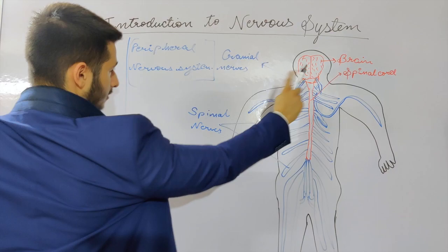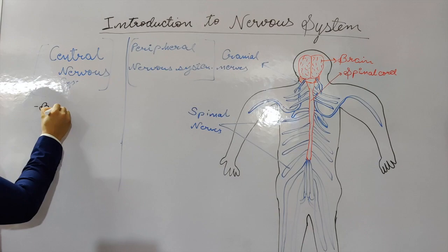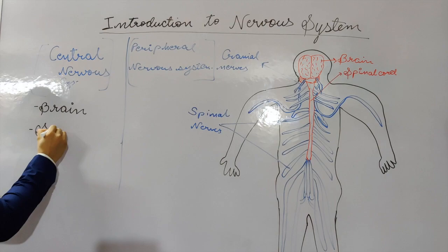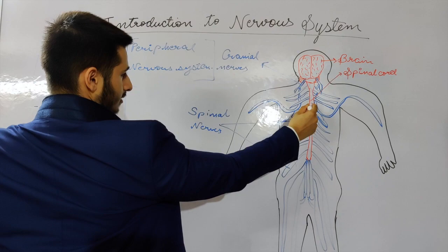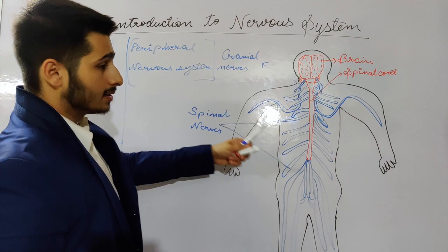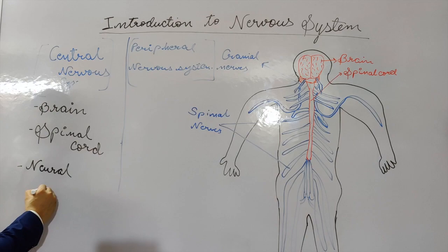The central nervous system is made up of the brain and the spinal cord. This is the human brain and this is the spinal cord that descends down from the cranium. The brain and spinal cord develop from the neural tube, which is present in the embryo.